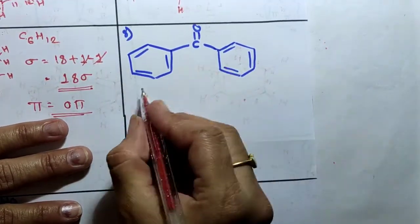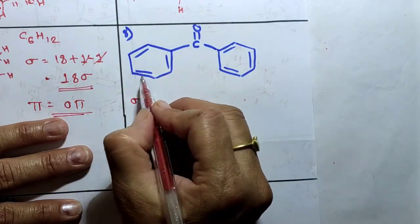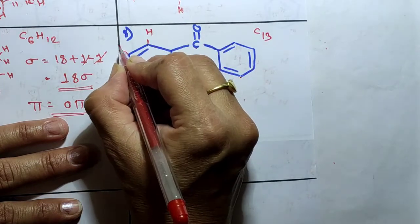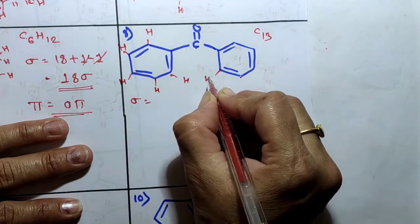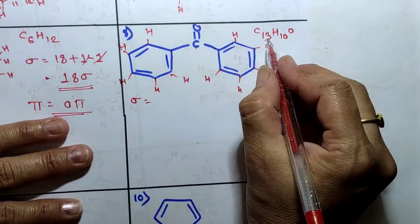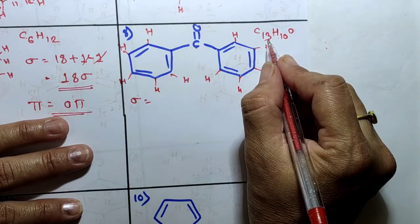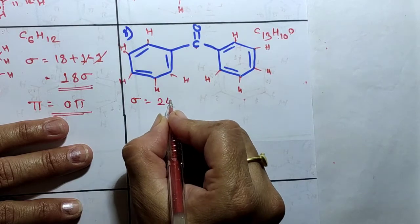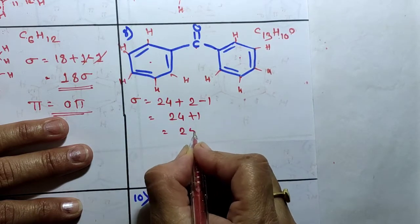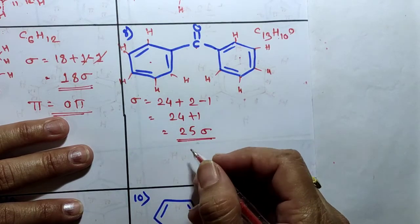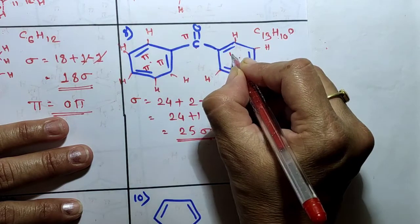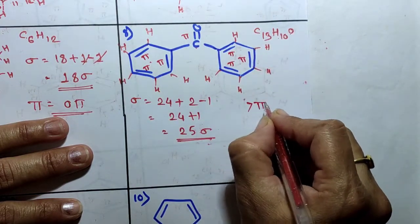Next compound: calculating sigma bonds. It contains 13 carbon atoms (C13), 10 hydrogen atoms (H10), and 1 oxygen atom (O1), giving molecular formula C13H10O. Total number of atoms = 24. Number of rings = 2, minus 1 = 1. So 24 + 1 = 25 sigma bonds. For pi bonds: there are 7 double bonds present, so 7 pi bonds. This compound has 25 sigma bonds and 7 pi bonds.